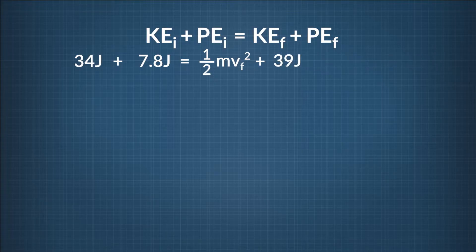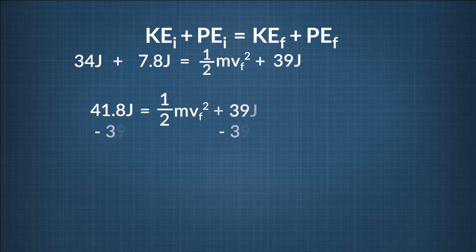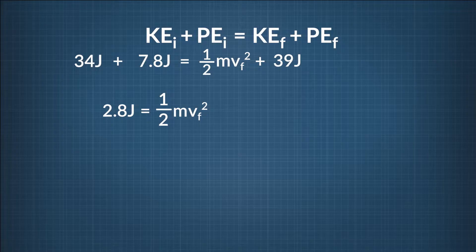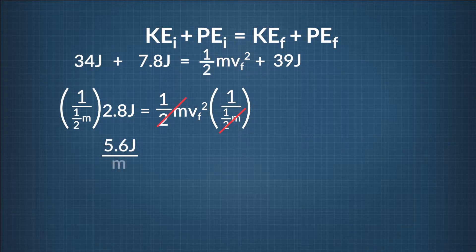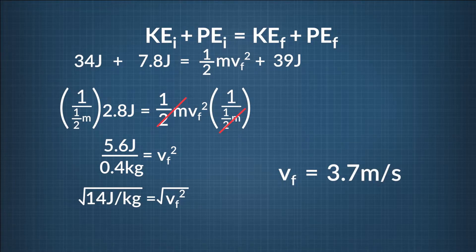Now let's rearrange our equation to solve for V final, the football's velocity at 10 meters off the ground. First, let's add the numbers on the left side of the equation: 34 joules plus 7.8 joules, which gives us 41.8 joules on the left. Now subtract 39 joules on both sides — that gives us 2.8 joules equals one-half mass times the final velocity squared. Multiply both sides by 1 divided by one-half times mass, leaving us with 5.6 joules divided by the mass equals the final velocity squared. Plugging in our mass of 0.4 kilograms gives us 14 joules per kilogram equals the final velocity squared. Taking the square root of both sides gives us a final velocity of 3.7 meters per second.